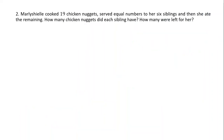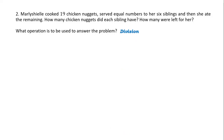Next problem. Marley Shell cooked 19 chicken nuggets, served equal numbers to her six siblings, and then she ate the remaining. How many chicken nuggets did each sibling have? How many were left for her? Division is to be used because equal numbers of chicken nuggets were served to her siblings.